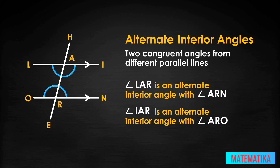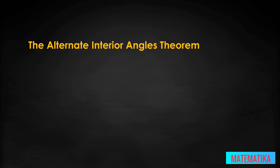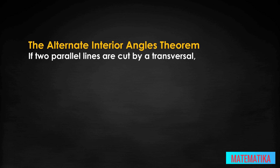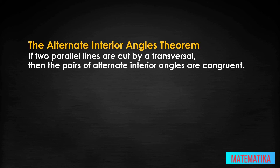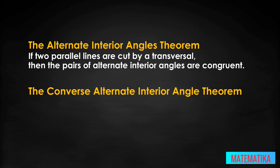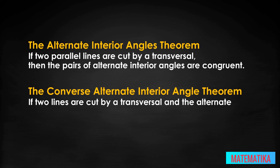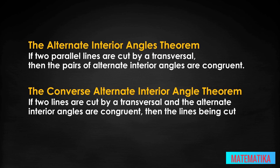Once you can recognize and break apart the various parts of parallel lines with transversals, you can use the alternate interior angles theorem to speed up your work. The alternate interior angles theorem states that if two parallel lines are cut by a transversal, then the pairs of alternate interior angles are congruent. The converse is also true: if two lines are cut by a transversal and the alternate interior angles are congruent, then the lines being cut by the transversal are parallel.